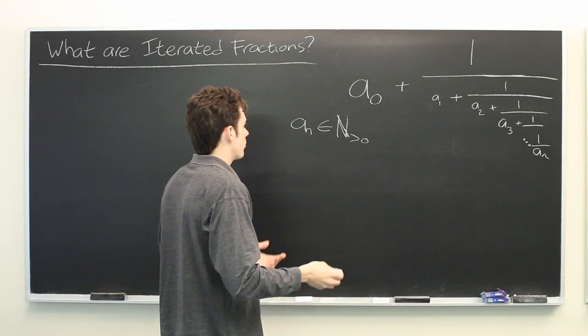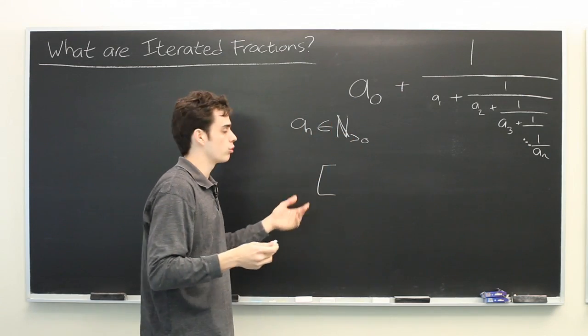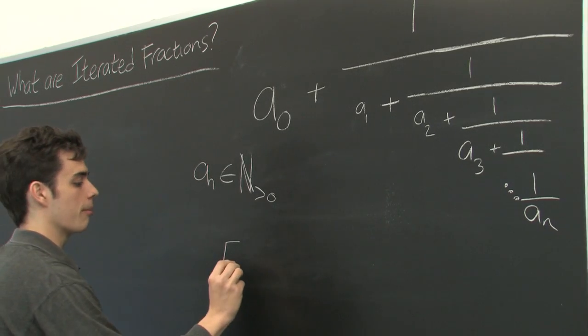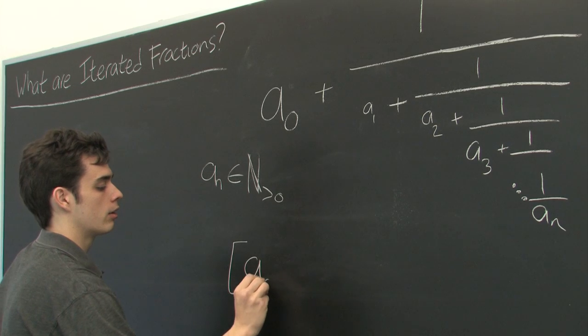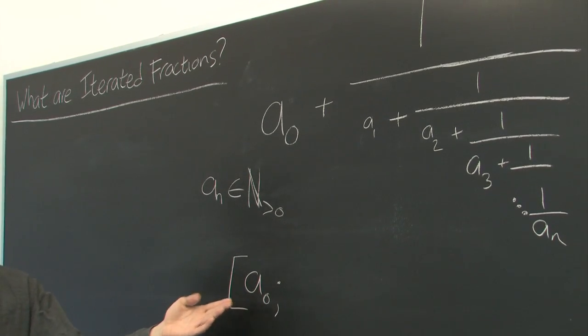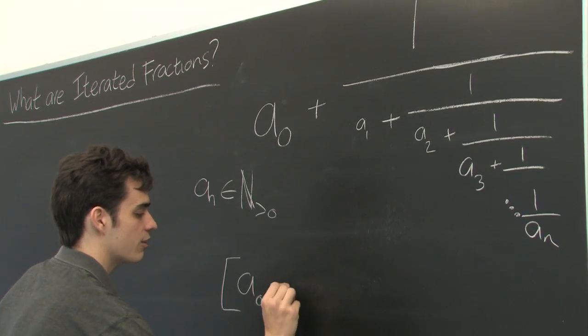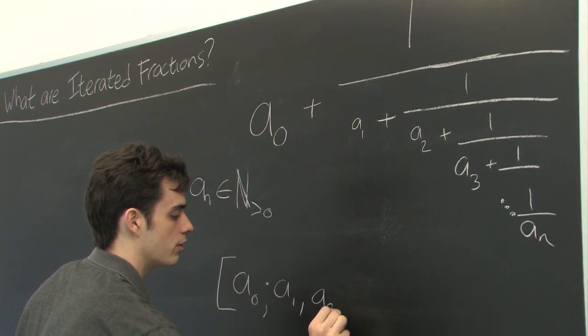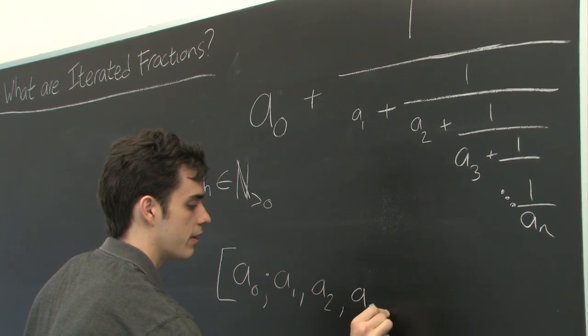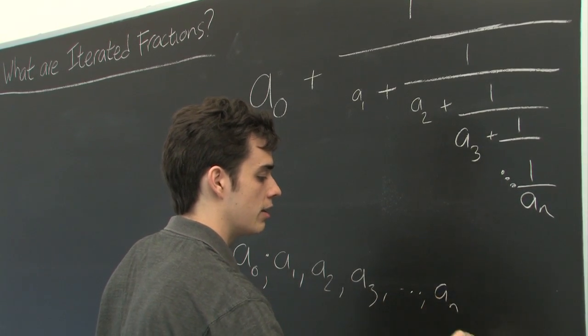Now, there's a very natural way of expressing this in a much shorter notation, or more compact. We simply put in our first coefficient, a0, followed by a semicolon. And then, we just list off the others. a1, a2, a3, and so on and so forth, until we get to an.